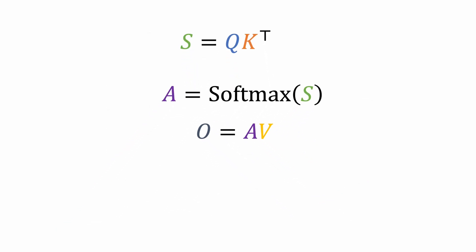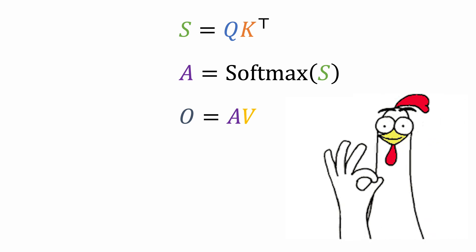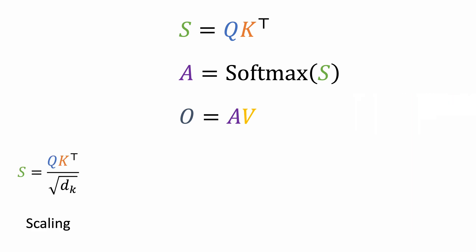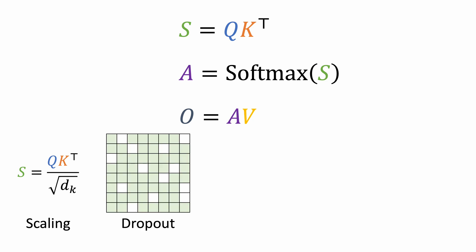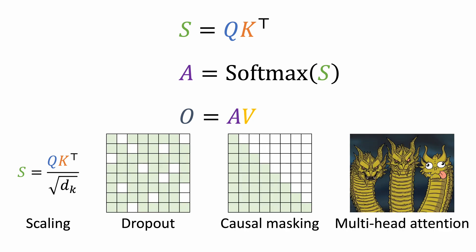So the whole process boils down to these three simple equations. For simplicity, I'm leaving out some details like dot product scaling, dropout, causal masking, and multi-head attention.